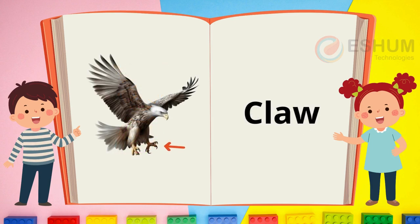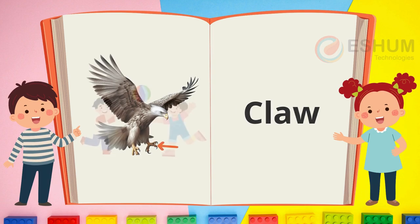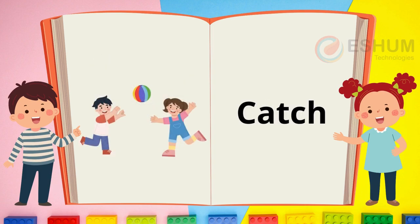Claw. An animal's feet have claws. In the picture an arrow is pointing to claws on the bird. Most animals have sharp claws. Catch. In the picture the boy throws the ball and the girl catches it — she puts it in her hands when it's in the air. Can you catch?